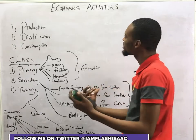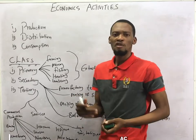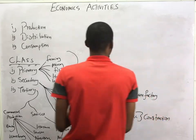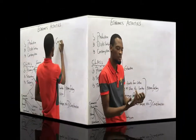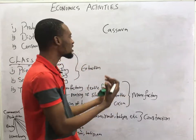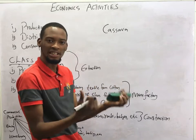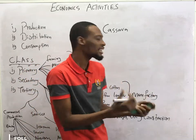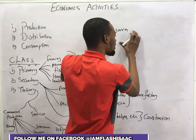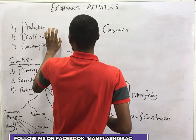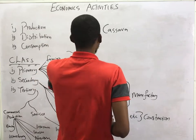These are the main activities in economics. Production is the art of transforming raw materials into finished goods. For example, you can process cassava into finished goods — to get gari, to get santana, and other products from cassava. In that case, you have processed the raw material and gotten a finished good. So production is one activity in economics.